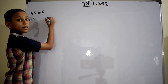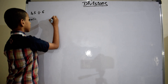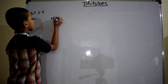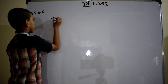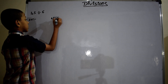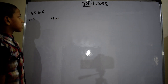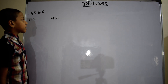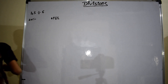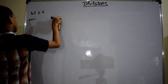Write the divisor and dividend as shown. Recite the table of 6 mentally till you get 45.